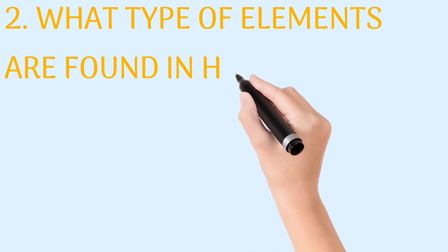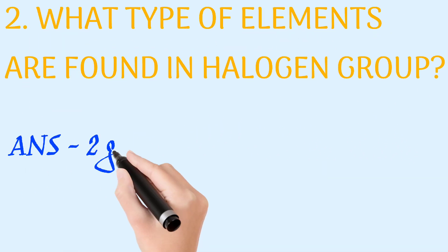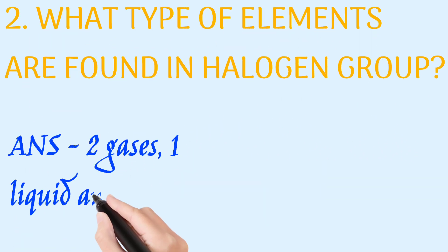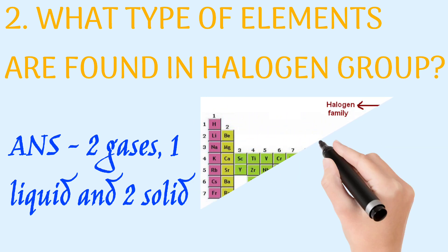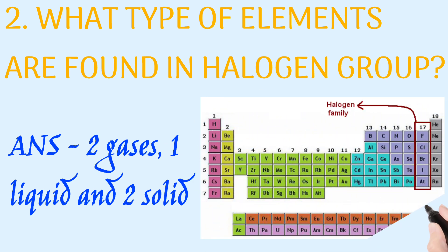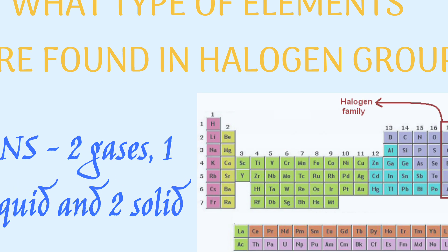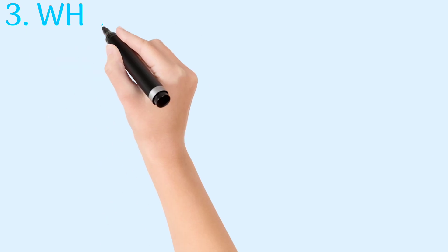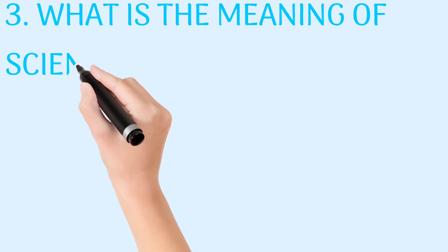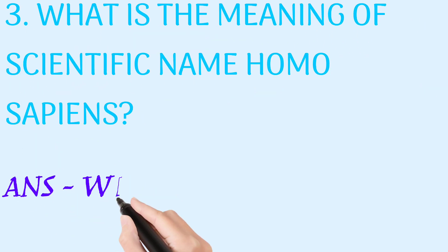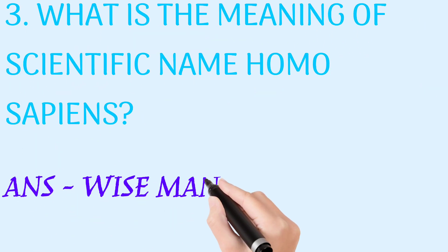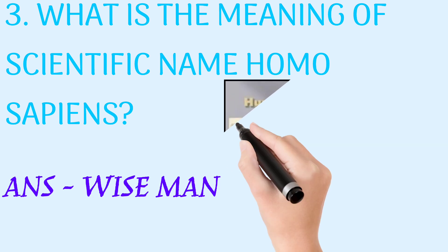What type of elements are found in the halogen group? Answer: two gases, one liquid, and two solids. What is the meaning of the scientific name homo sapiens? Answer: weissman.